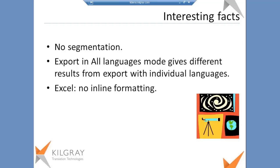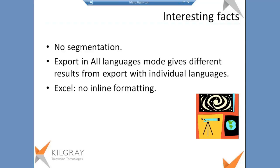If you export with individual languages — say you have a project English into French and German — if you export the French, the English will obviously remain intact and the German will also remain intact. Everything that was in the original file will be written in. If you export it to German, the German translations will be there but the French won't change. Whereas if you export in all-languages mode from a multilingual project, both the German and the French will change. This bilingual workflow enables you to have everything else intact and just your language translated.